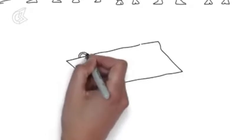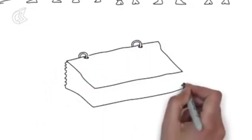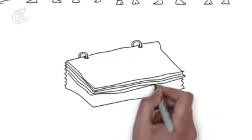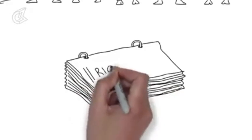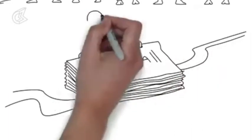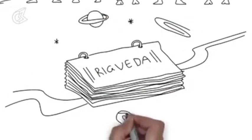4000 years ago, the Rishis of Aryavarta composed the Rig Veda. In it, they praised the sun, the moon, and the planets. They paid homage to the forces that hold the universe together.